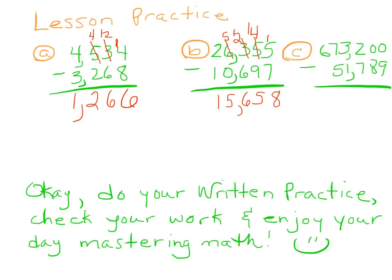For the last one, you can see we're going to need to borrow. We have two zeros here, so I go over and make this a 1, automatically make this 9, and make that 10 — remember how we did that on the other one. So 10 minus 9 is 1, 9 minus 8 is 1. 1 minus 7 is not going to happen, so we borrow and regroup: 11 minus 7 is 4. 2 minus 1 is 1. 7 minus 5 is 2. Then we just bring down the 6 because there's nothing to subtract there. Do your written practice, check your work, enjoy your day mastering math — you're going to do fantastic.